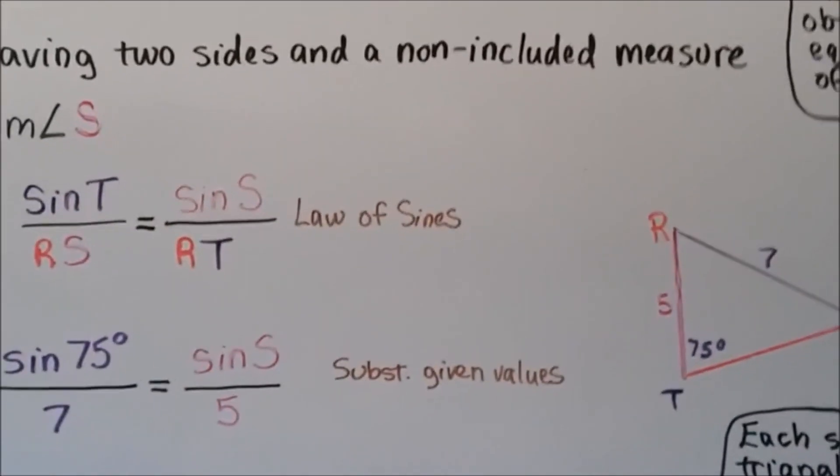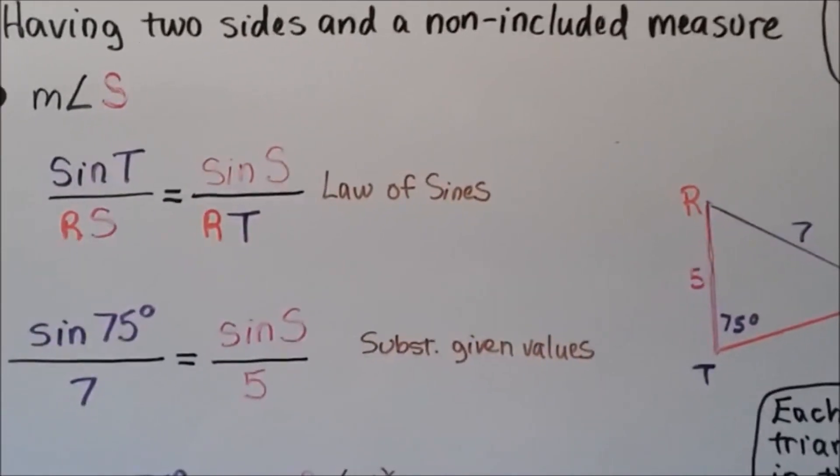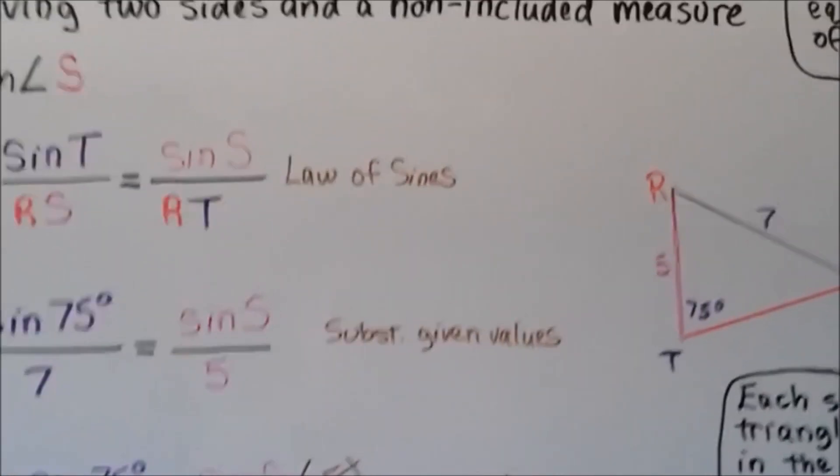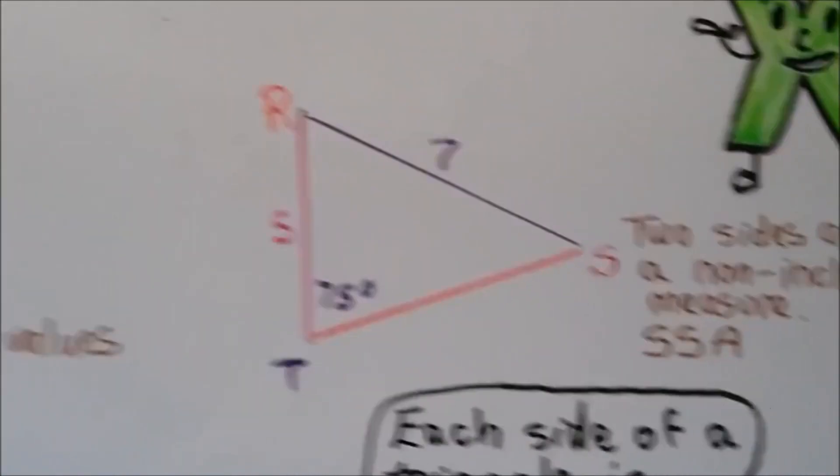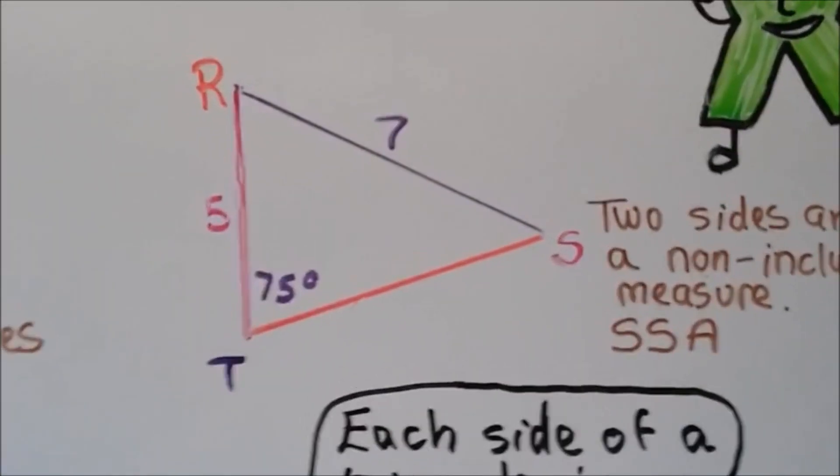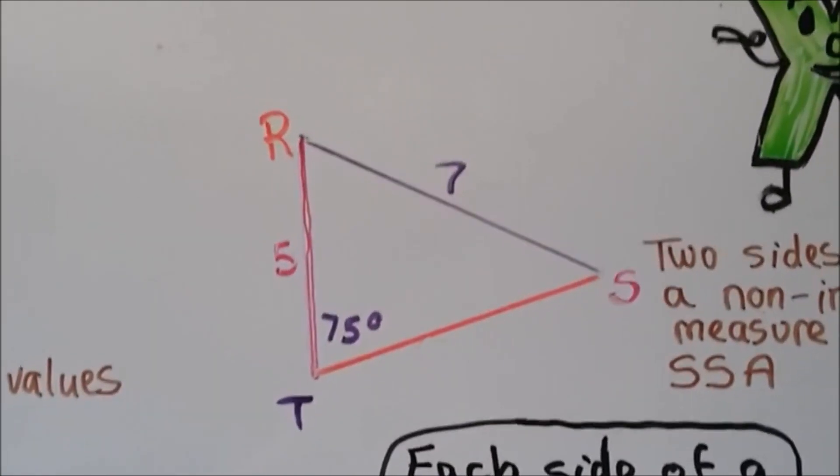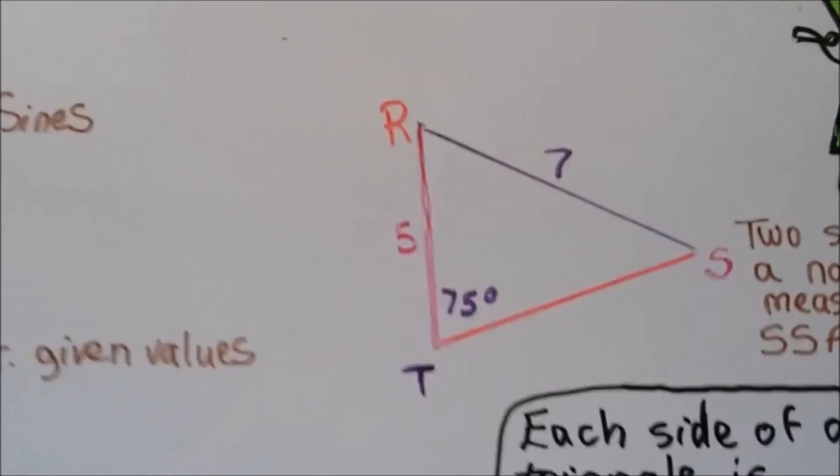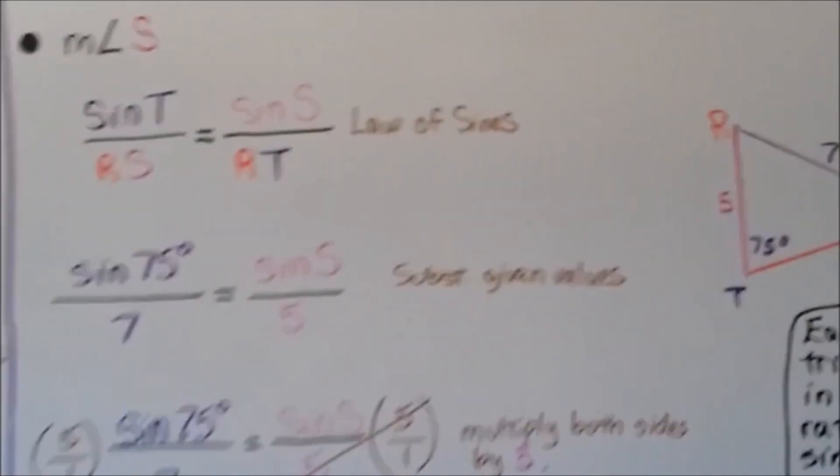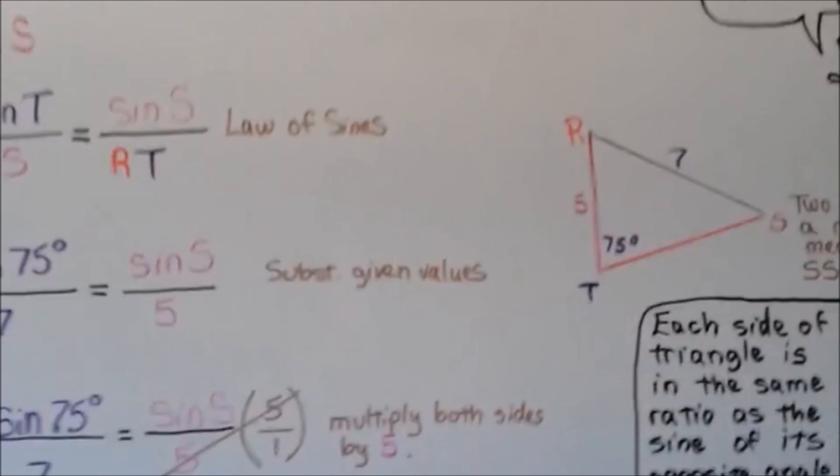This is a little different having two sides and a non-included measure. Here we have this triangle. We've got two sides and a non-included measure. We've got a side that's seven, a side that's five, and an angle that's 75 degrees. So that's SSA, side-side-angle.